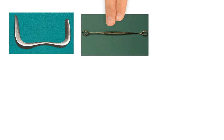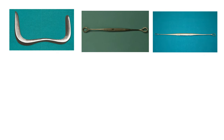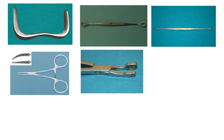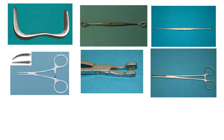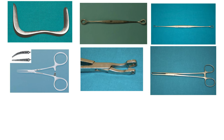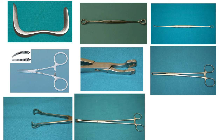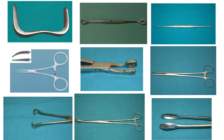We learned about the Sims speculum, the Sims' anterior vaginal wall retractor used simultaneously with the speculum, the uterine curette, hemostatic forceps, punch biopsy forceps, Allis forceps, Babcock's forceps used to hold tubular structures, and sponge holding forceps mainly used in painting and preparing parts pre-operatively. Finally, we learned about the ovum forceps.